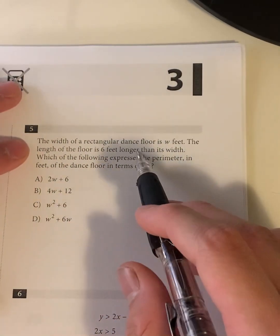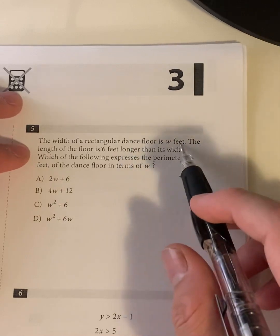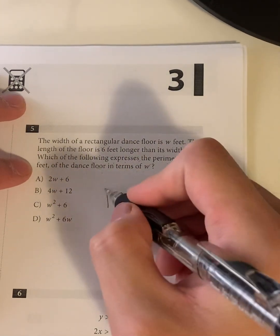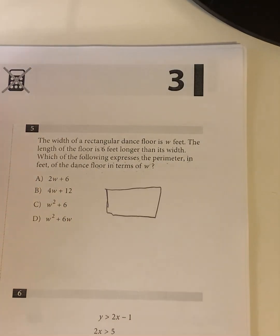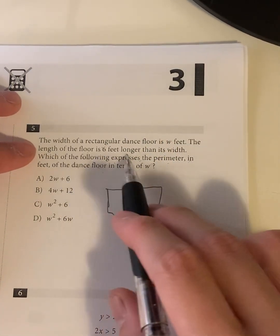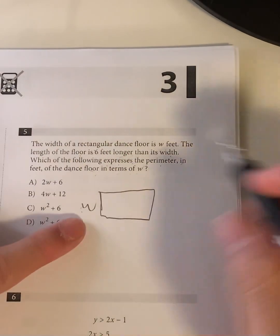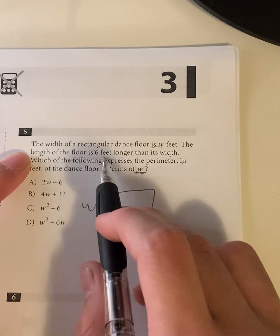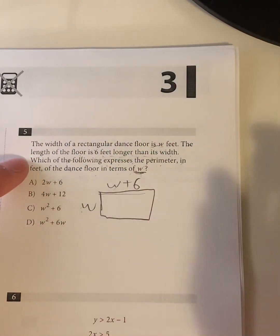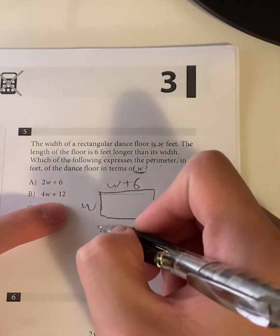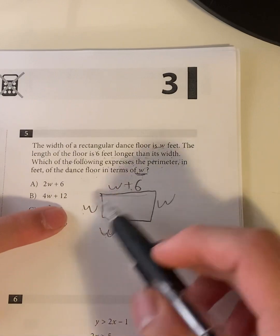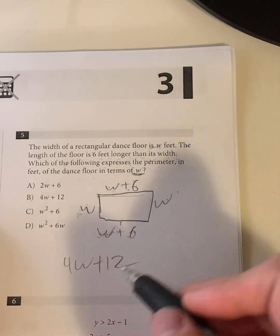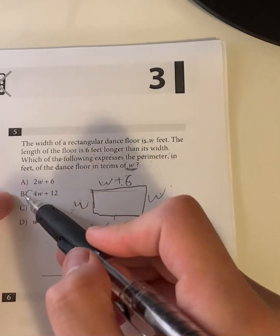Question 5. The width of the rectangular dance floor is W feet. The length of the floor is 6 feet longer than its width, which of the following expresses the perimeter in feet of the dance floor in terms of W. So let's just draw the rectangular dance floor, something like that. It's a horrible rectangle, but I'll have to do it for now. The length is 6 feet longer than the width. Well, we'll call this W, the width, right? Because that's the width. The length of the floor is 6 feet longer than the width. So the length has to be W plus 6. Now the question is asking for the perimeter. So this has to be W, this has to be W plus 6, right? All the sides have the same measure. So the perimeter is when we add up all these. W plus W plus W plus W. It's 4W plus 6 plus 6, which is 12. We add up the Ws and we add up the numbers. 4W plus 12 should be your perimeter, also meaning B is your answer.